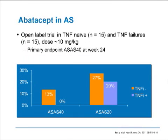The last treatment topic I want to cover briefly is a paper published within the last year on the use of abatacept in ankylosing spondylitis. For patients with AS who have failed TNF inhibitors, we struggle to find other potential therapies. This open-label trial showed that there was really very limited benefit with abatacept at standard doses, either in TNF-naive patients or, more particularly, in TNF failure patients where we would be looking for another option. Unfortunately, this confirms some previous anecdotal evidence that this is not a useful option in this situation.